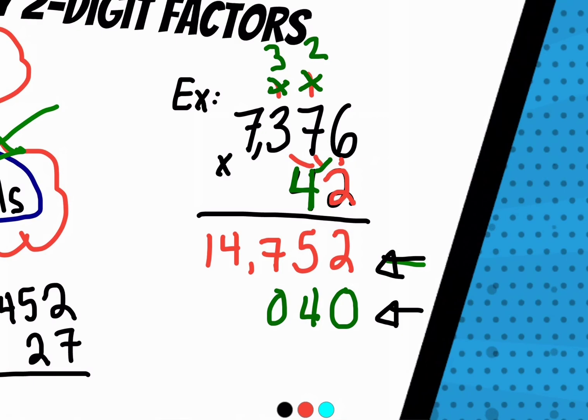Four times three is 12 plus three is 15, carry the one.